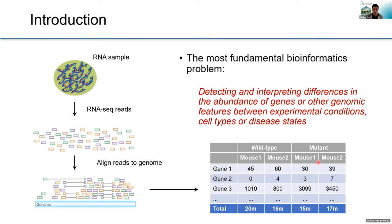The final output of RNA-seq data is a count matrix, as shown in this example. edgeR was designed to solve the most fundamental biometric problem in an RNA-seq experiment: to detect and interpret differences in the abundance of genes or other genomic features between experimental conditions, cell types, or developmental states. In this example, we compare wild-type mice with knockout mice.